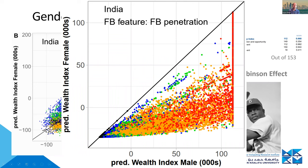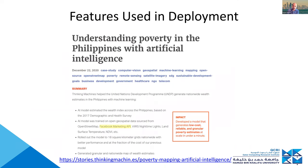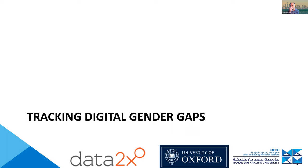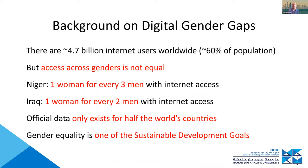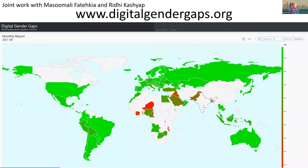We're happy that this work went beyond just a paper. The Facebook penetration feature continues to be used by a partner of ours in the Philippines called Thinking Machines, incorporated together with other features in models they built for UNDP's business plan.